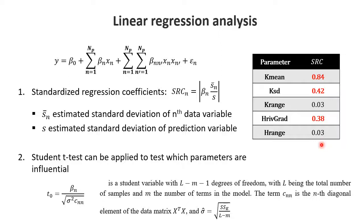We can go further and apply a Student t-test, because with a limited number of runs we have to worry about whether differences are significantly different from zero. We create a t-value, which is the estimated parameter divided by a standardization of two variances — the diagonal term of the X-transpose-X matrix and an estimation variance standardized by the degrees of freedom. This is the typical t-statistic used for that.